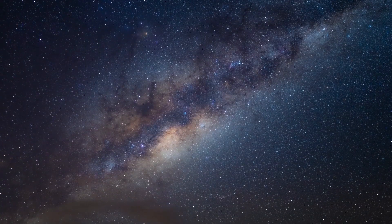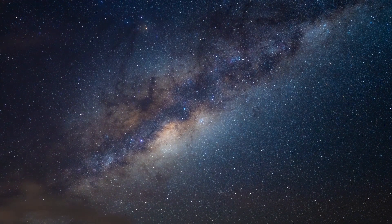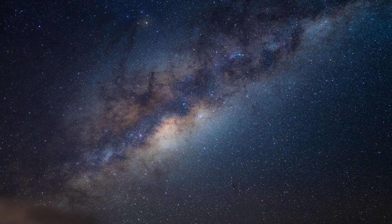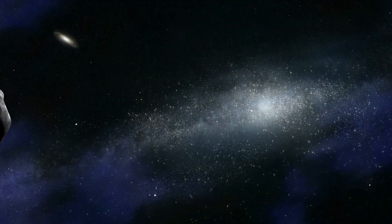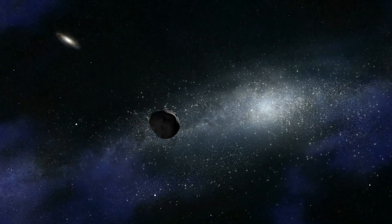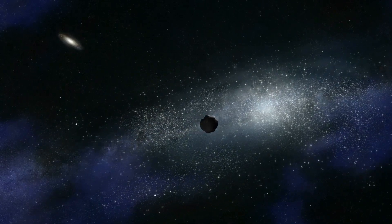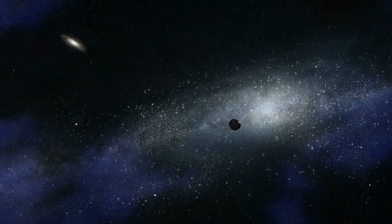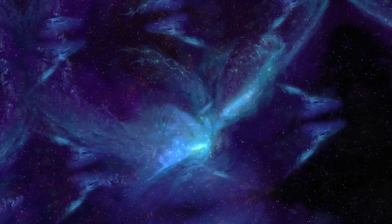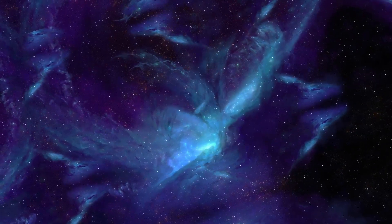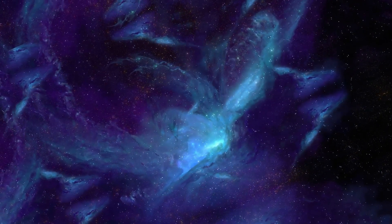General relativity introduces the idea of black holes, which are regions where gravity is super intense. Inside a black hole, the gravitational force is so powerful that nothing, not even light, can escape from it. The edge surrounding a black hole is called the event horizon, and it's like a point of no return. Once something crosses this boundary, it gets pulled into the black hole without any chance of returning.